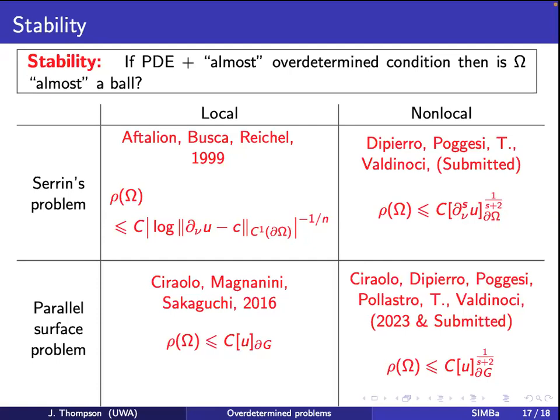Interestingly, the exponent we get here is actually formally better than in the local case — because in the local case you have a logarithm term, whereas here we get an improvement without one. That's something we're not sure why it occurs either.